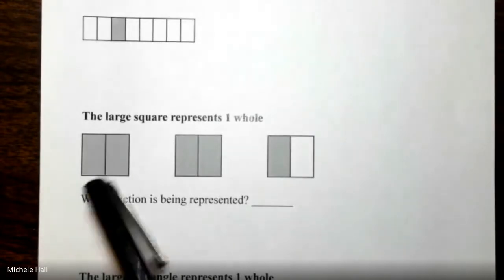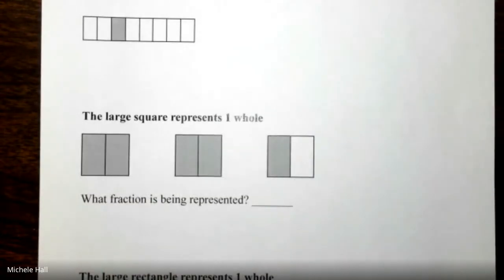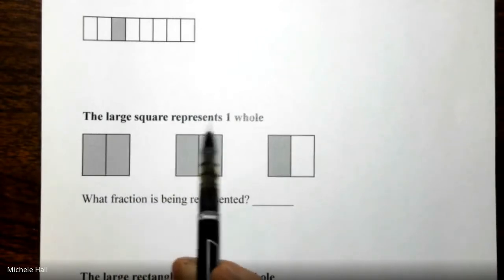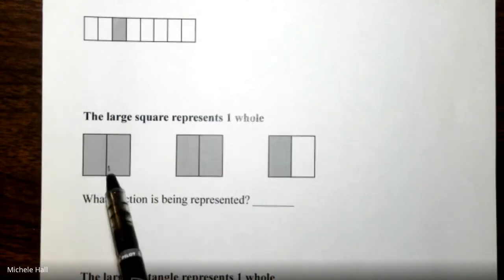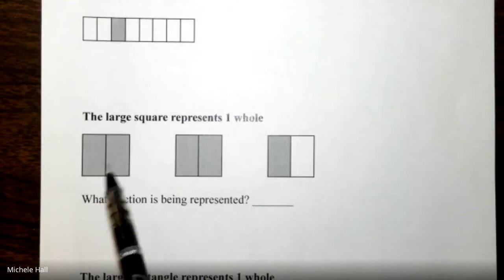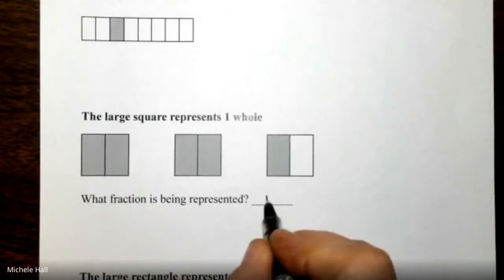Here we have three different pieces. We need to be specific about the parts that we are calling the whole. The large square represents one whole. Here is a large square and that represents one whole. We can see that one whole is going to have two parts per whole. That's the denominator.